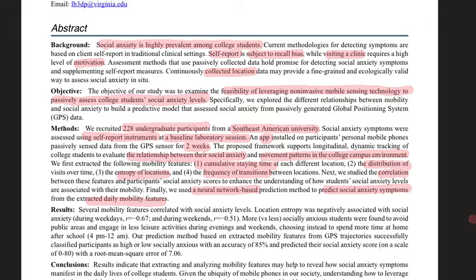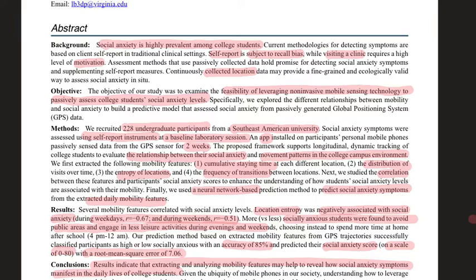Their results indicated that significant information embedded in location data can be used to make accurate predictions of social anxiety levels. For instance, location entropy was negatively associated with social anxiety, meaning socially anxious students tended to avoid public areas and engage in less leisure activity during evenings and weekends. The model predicted high or low social anxiety with 85% accuracy, and regression on the 0–80 SIAS scale achieved an RMSE of 7.06.